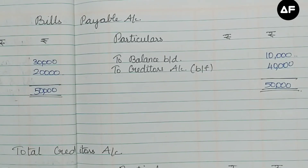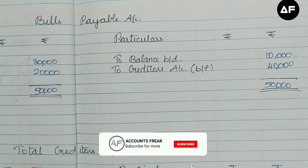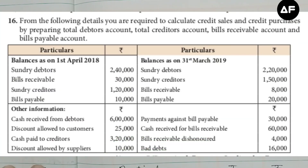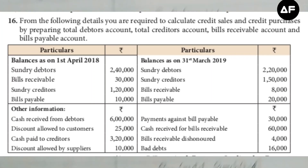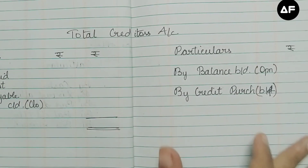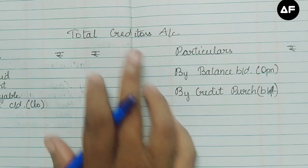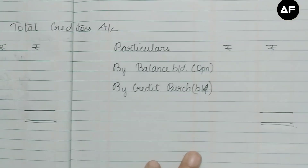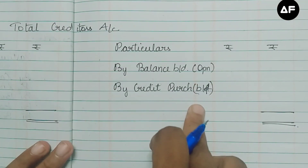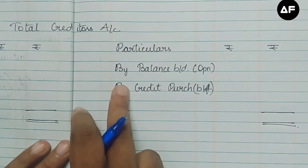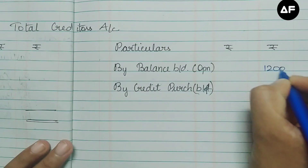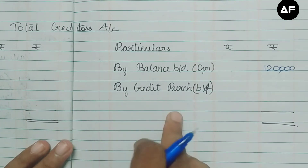For the total creditors account, we need the opening and closing creditor balances. Additionally, we need cash paid to creditors of 3,20,000; discount allowed by the supplier of 10,000; and the bills payable figure of 40,000 transferred from the bills payable account. I've written down the total creditors account format. Starting with the credit side: it reflects only the opening balance of 1,20,000 and the credit purchases as the balancing figure.